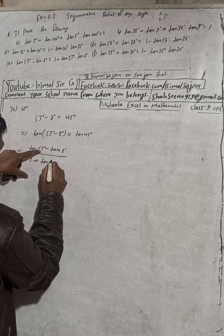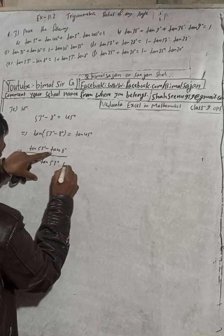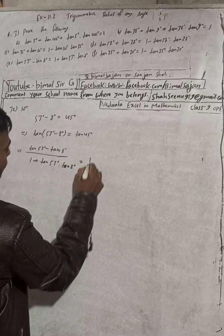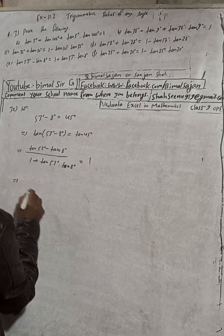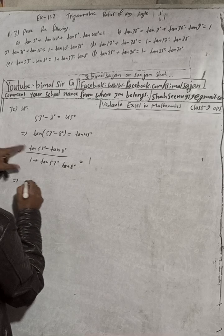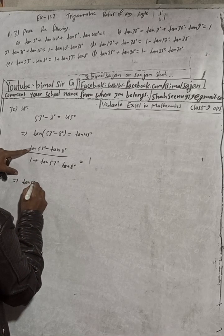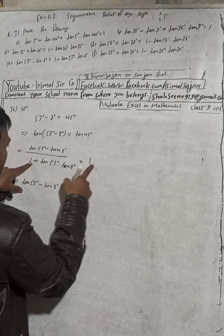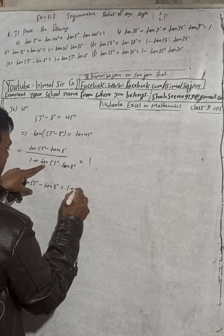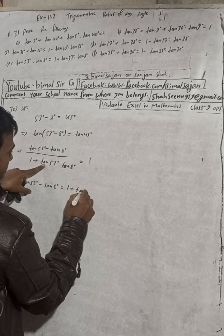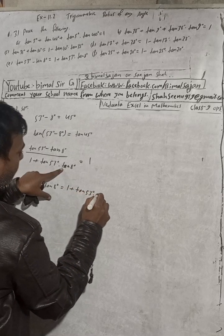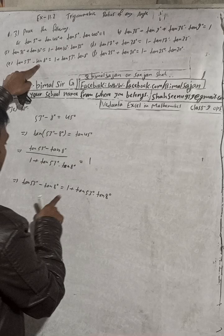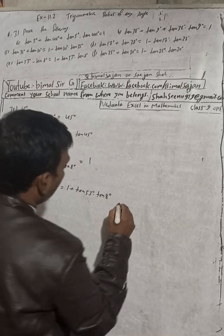Cross multiply: tan53° − tan8° = 1 × (1 + tan53°·tan8°), so tan53° − tan8° = 1 + tan53°·tan8°. This is what we had to prove — proved.